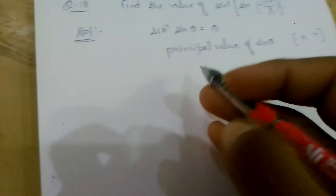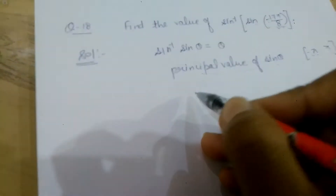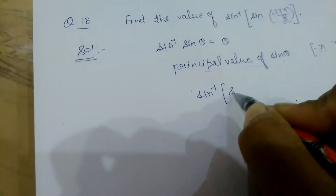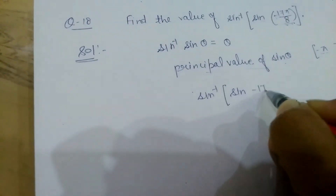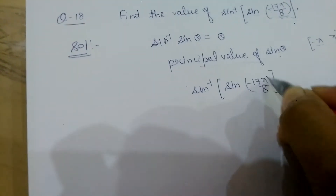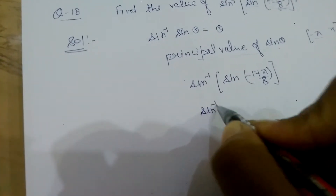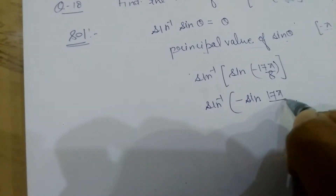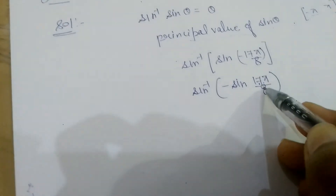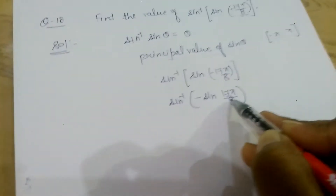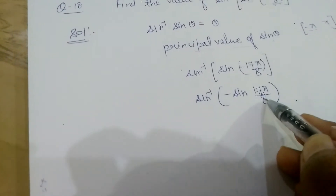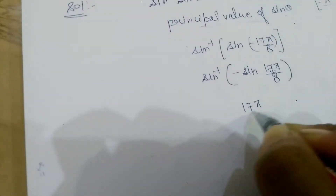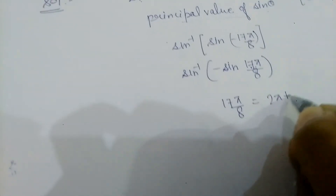We convert using trigonometric identities. sin⁻¹(sin(-17π/8)) can be written as sin⁻¹(-sin(17π/8)). Now we convert 17π/8: we know that 17π/8 can be written as 2π + π/8.